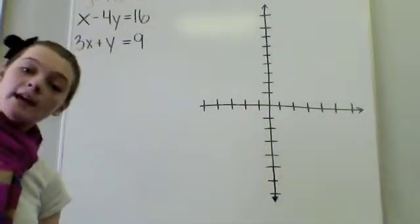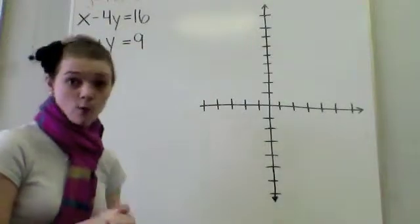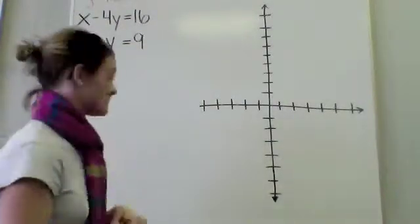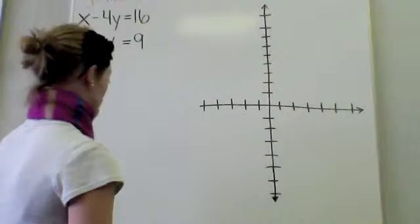Reminder, b is your y-intercept and m is your slope, which is the change in y over the change in x. Neither of them are in slope-intercept form.